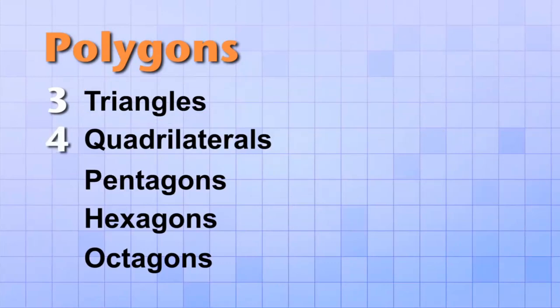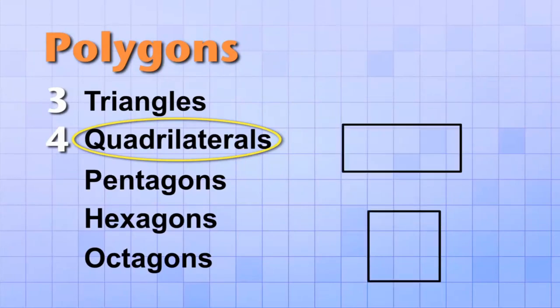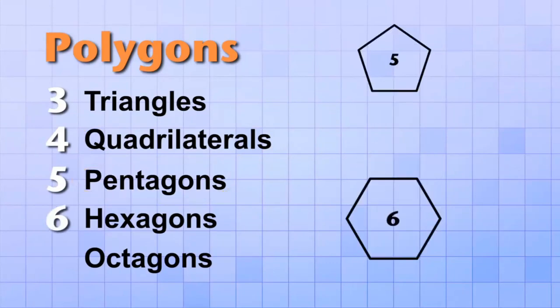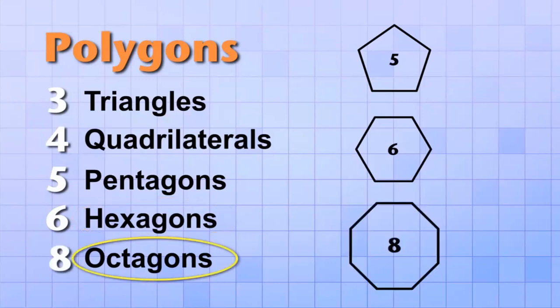Four-sided polygons are called quadrilaterals — a fancy math word, but it helps to remember that 'quad' means four. Quadrilaterals are shapes like squares, rectangles, and parallelograms. Five-sided polygons are called pentagons. Six-sided polygons are called hexagons, and eight-sided polygons are called octagons.